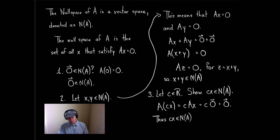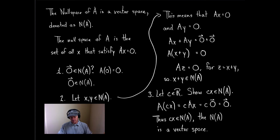And since all three requirements were met, the null space of A is a vector space. I hope that helps — thanks for watching!